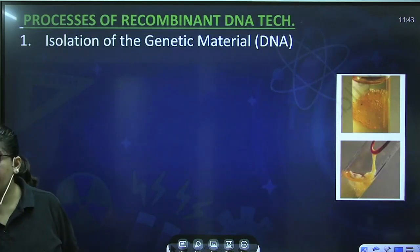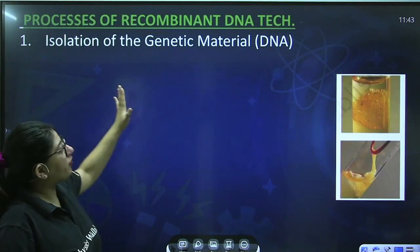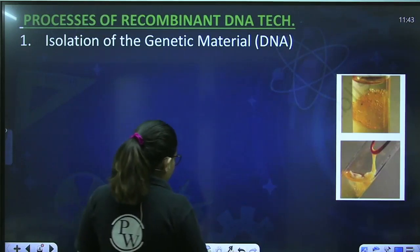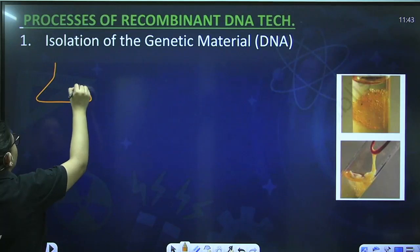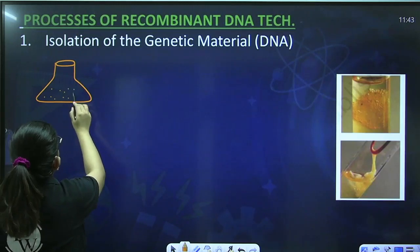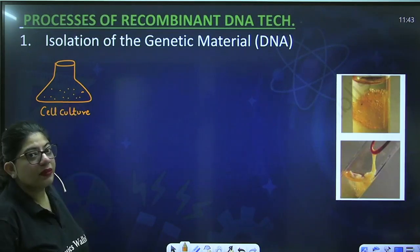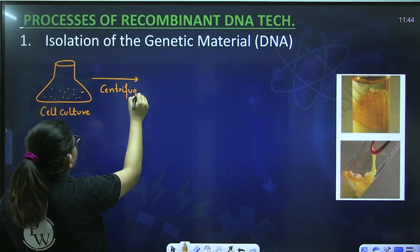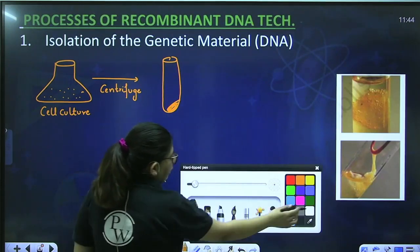The first step is isolation of the genetic material — that is DNA. To take out the DNA, there are various steps. First, we take the cell culture — whatever cells are multiplying, for example human beta cells inside a flask — and then you centrifuge it. After centrifugation, a pellet of cells is obtained.